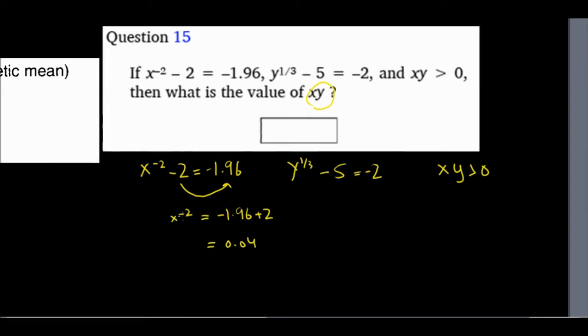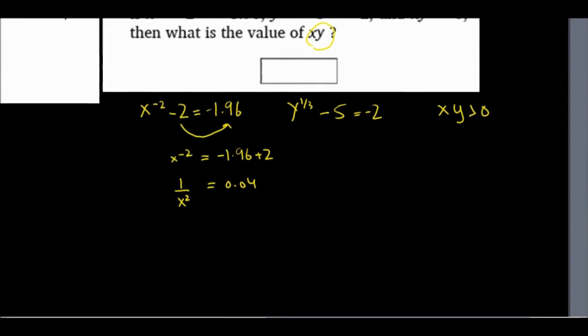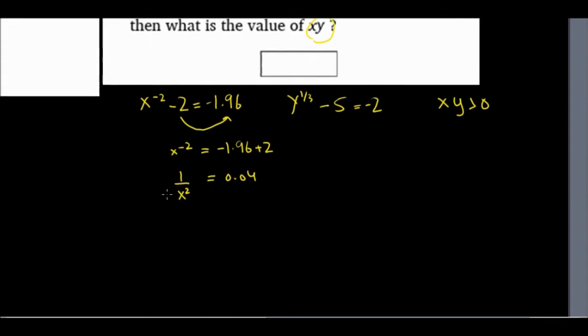x to the minus 2. I don't like the negative in the exponent. So one way I can write a reciprocal and that way the power becomes positive. Remember, as you switch between the numerator and denominator, the power switches between positive and negative values. So I have 1 over x squared equals 0.04.